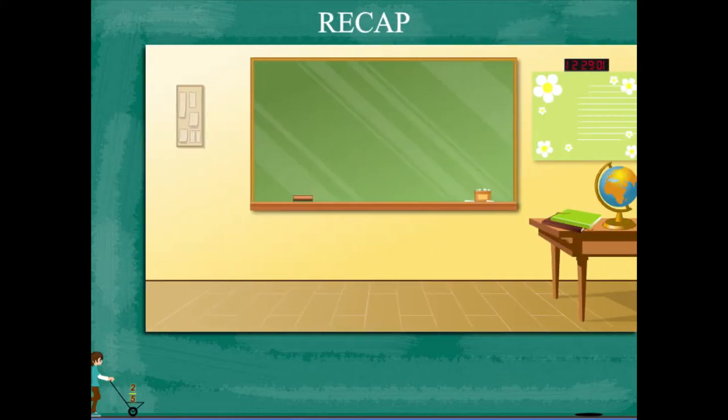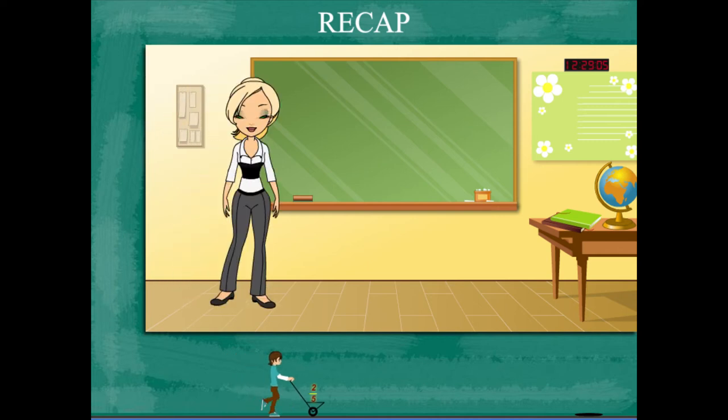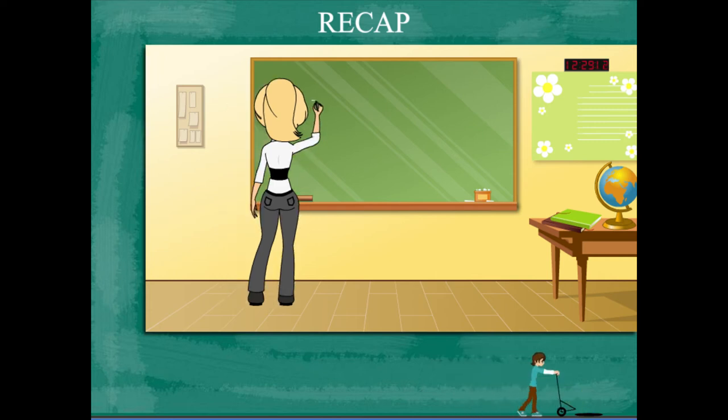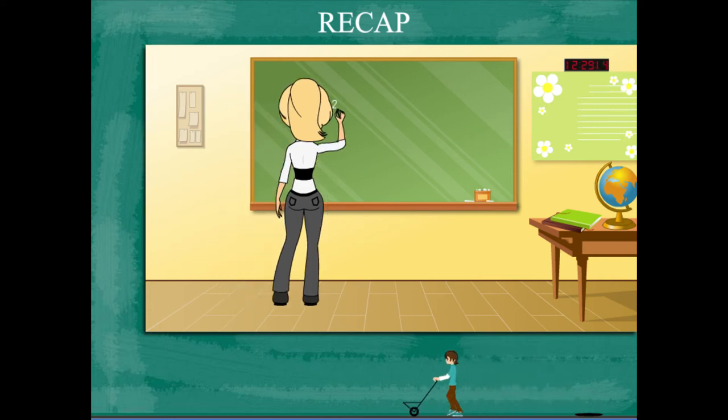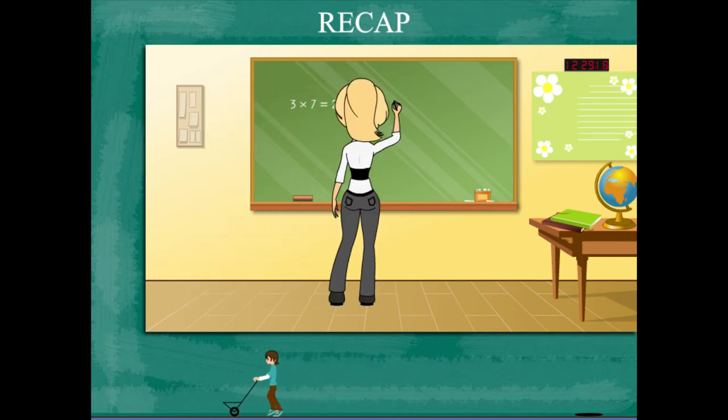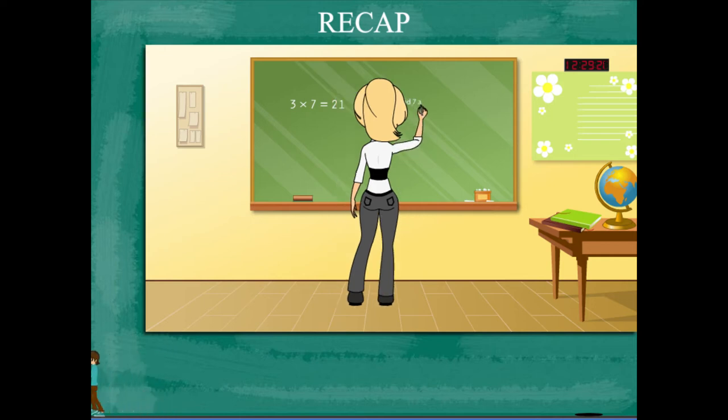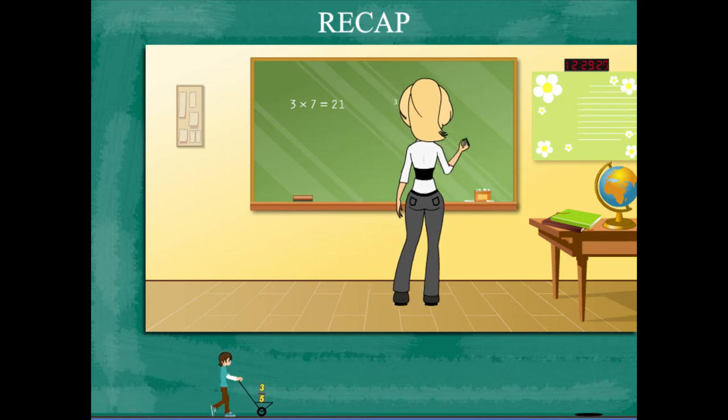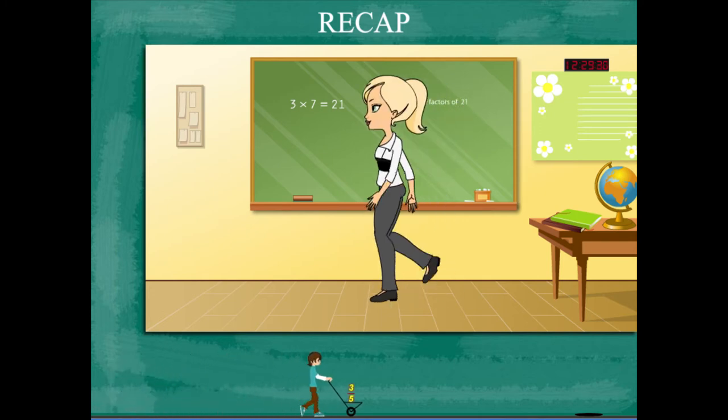Teacher Rosie is in the class for a recapitulation session. She writes 3 × 7 = 21, explaining that 3 and 7 are factors of 21. The product of these factors is 21.